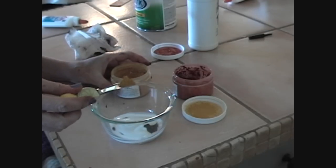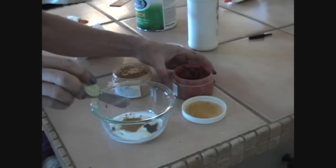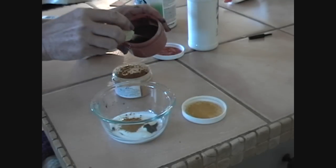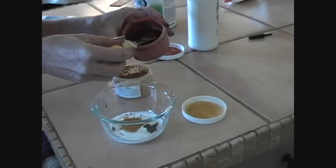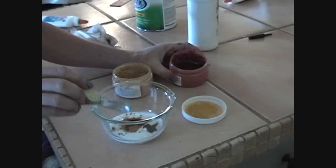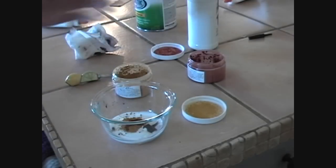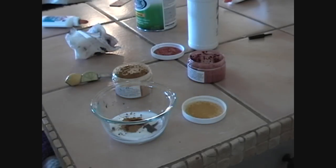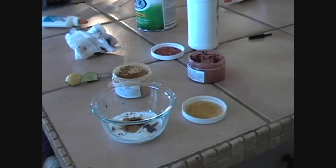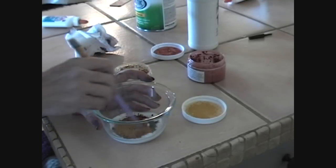I'm putting in about a teaspoon of yellow iron oxide. It's not magnetic, it's just color. And about a quarter teaspoon of the red. Now we're just going to stir that around. What do I have for stirring? The end of a brush.